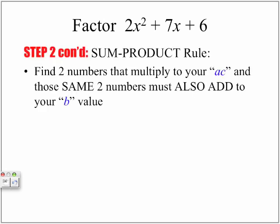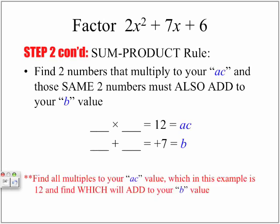Continuing with the sum-product rule: we're going to find two numbers that multiply to that A×C value we got, and those same two numbers must also add up to the B value. So our A×C value is 12. We want to find all factor pairs of 12, and those same two numbers must also add up to 7 — our B value. The rule is: find two numbers whose product equals A×C and whose sum equals the middle term B.